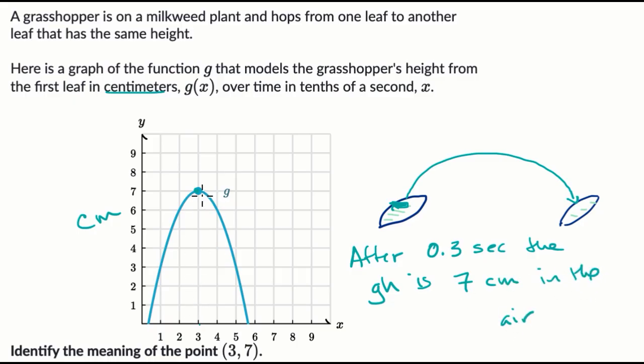And it looks like that's the peak height that the grasshopper actually achieves. So in this drawing right over here, if we call these two leaves even, it's going to be seven centimeters above either of the leaves.